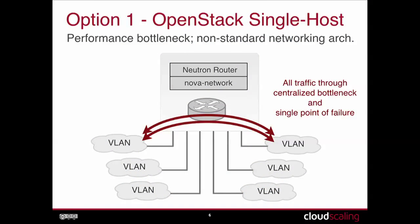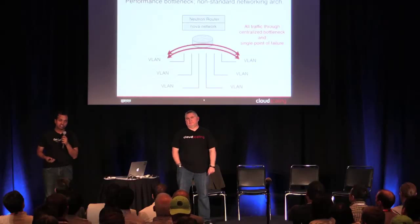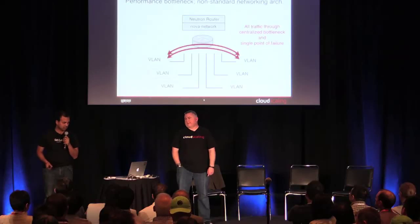In single host mode, all traffic flows through a single instance running Nova Network, an x86 box. It's pretty easy to see that at some point this will run into scaling constraints. And when that box goes down, the whole network goes down — not a very good situation. This also necessitates VLANs to support multi-tenancy, which comes with all the problems with VLANs. VLANs run out of possible tags at some point, and if a tenant requires more nodes than there are tags, you're out of luck.